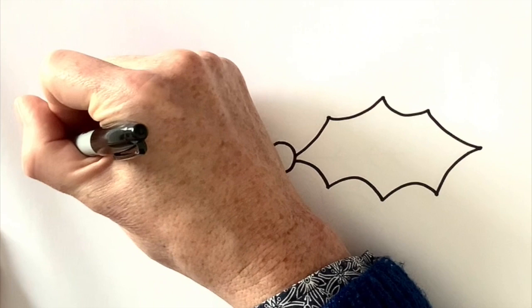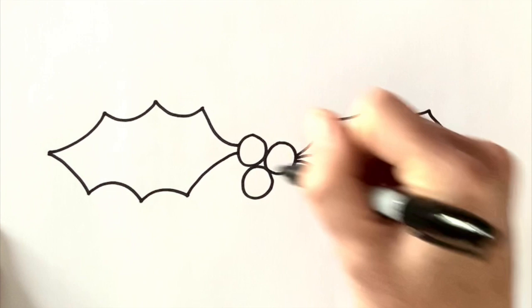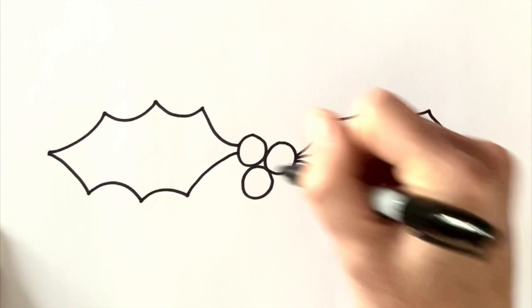One, two, three, four curvy lines and then four more. One, two, three, four curvy lines coming back to make those holly leaf shapes. And then a line that almost goes to the end of each holly leaf but not quite.